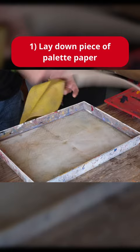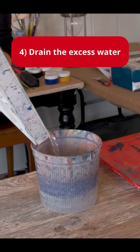To set it up, first lay down a piece of your palette paper and put the sponge on top. Then soak the sponge, pour some water on it. Then go ahead and drain the excess water from the palette.